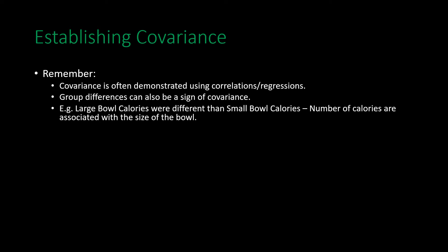When establishing covariance, remember that covariance is often demonstrated using correlations or regressions to show a relationship between variables, but group differences can also be a sign of covariance. For example, large bowl calories were different from small bowl calories, meaning there is some type of covariance between calories consumed and the size of the bowl in which food is served.